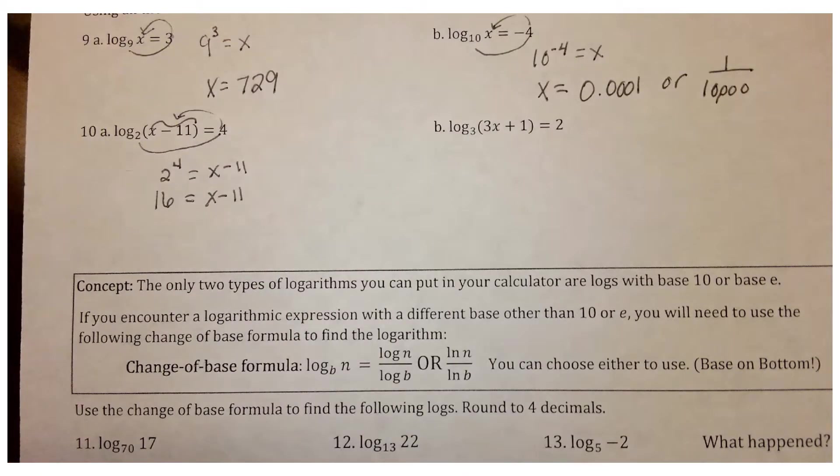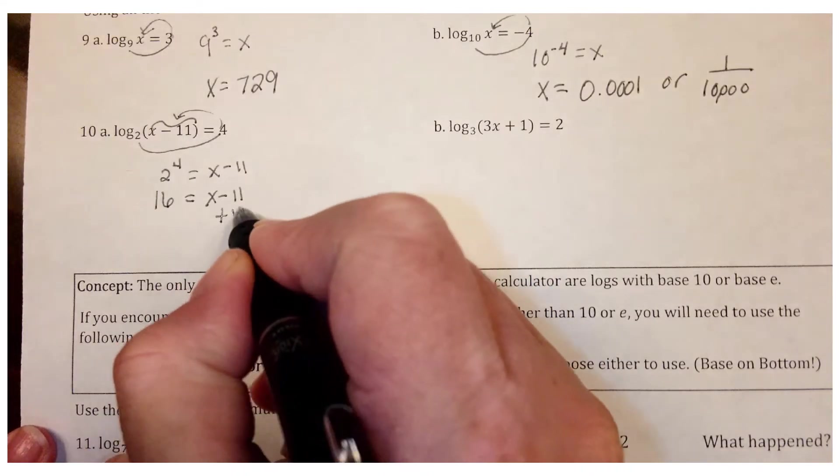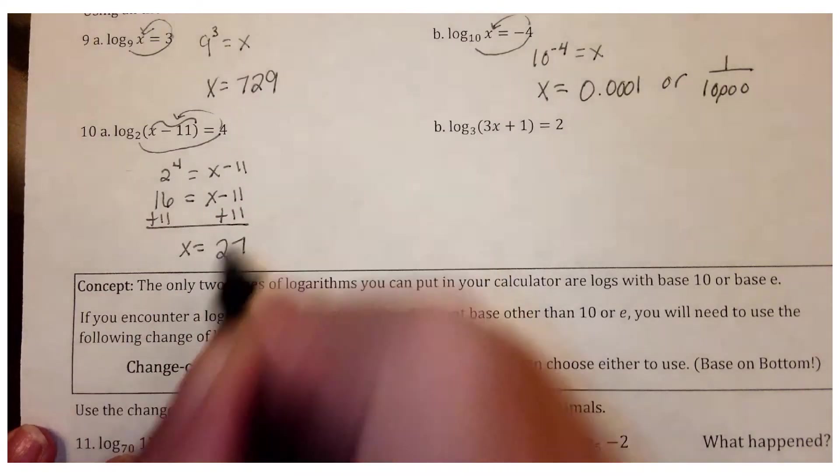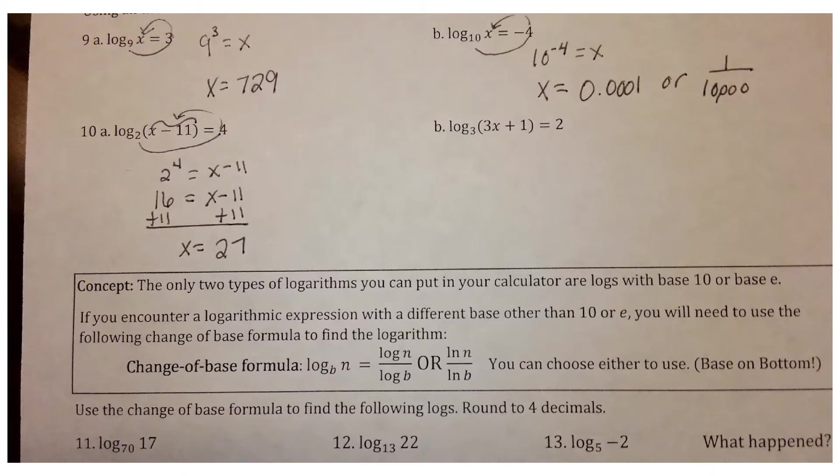And you see now that you have a linear equation now, which we've been doing since the beginning of algebra. So let's solve this just by adding 11. And we get that the answer is 27. So x in this problem would be 27.